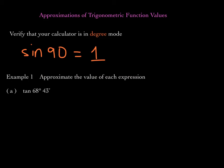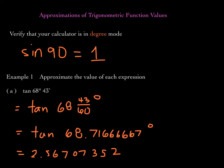Let's approximate the value of each expression. The first one is tangent of 68 degrees and 43 minutes. Some calculators allow you to input degrees, minutes, and seconds directly, and it will evaluate this for you. But if you can't find that button, what you can do is just divide 43 by 60 — remember that every 60 minutes is 1 degree — so dividing 43 by 60 gives you the whole angle in decimal degrees. I went ahead and divided 43 by 60, and tangent of 68 degrees 43 minutes is approximately 2.56707352.